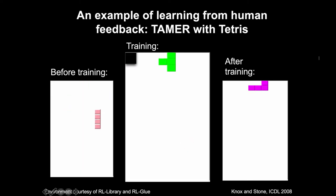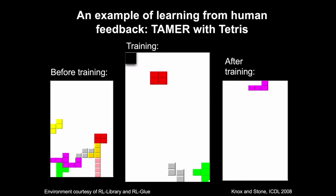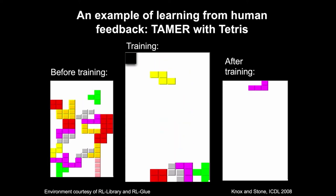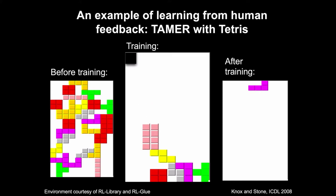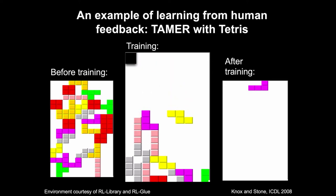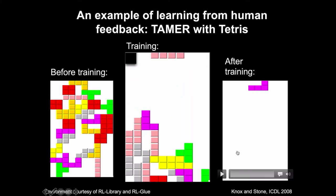Here's a training session where after a placement, the black box at the top left will flash red when a negative-one feedback is given and green for a positive one. Feedback can be given from the time of the placement to the time of the next piece's placement. If a button is pushed multiple times, that's a stronger amount of feedback — so pushing the positive button twice gives a label of positive two. You can tell it's already doing better than random, not fantastic, but better than random.